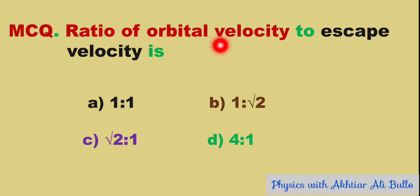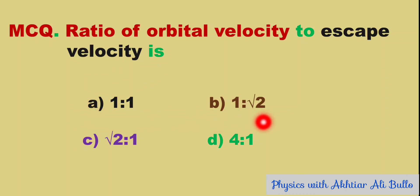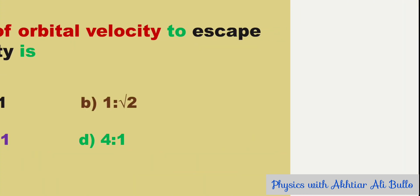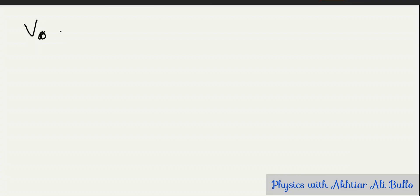The ratio of orbital velocity to escape velocity is: (a) 1:1, (b) 1:√2, (c) √2:1, (d) 4:1. The orbital velocity can be calculated by the formula...